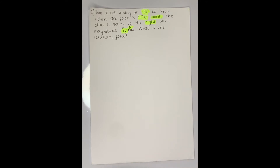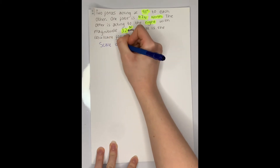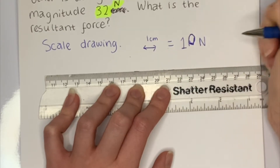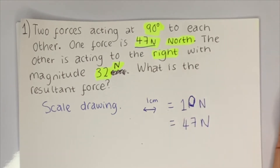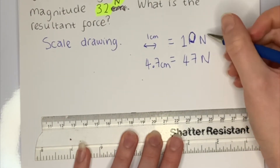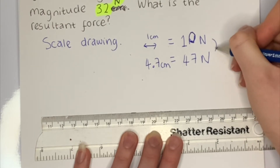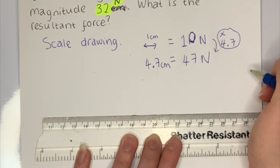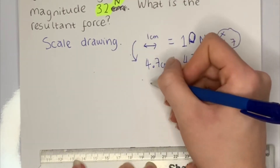The first thing I'm going to do is write down a scale. We need to draw a scale drawing, and I'm going to treat one centimetre as 10 newtons. So for the first force of 47 newtons, that must be 4.7 centimetres by my scale. To get that: 10 newtons is one centimetre, so to get 47 newtons I multiply by 4.7 — 10 times 4.7 gives us 47. Because I've multiplied one side by 4.7, I also need to multiply the other side by 4.7. Let's do the second force.